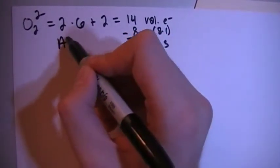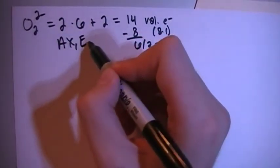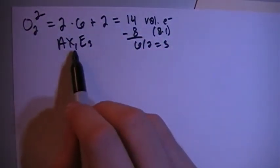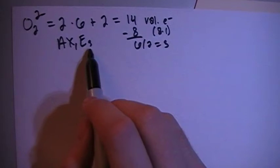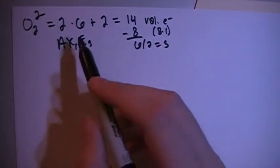This means this is going to have an AX1E3 type shape: central atom, one peripheral atom, three non-bonding pairs of electrons on the central atom.